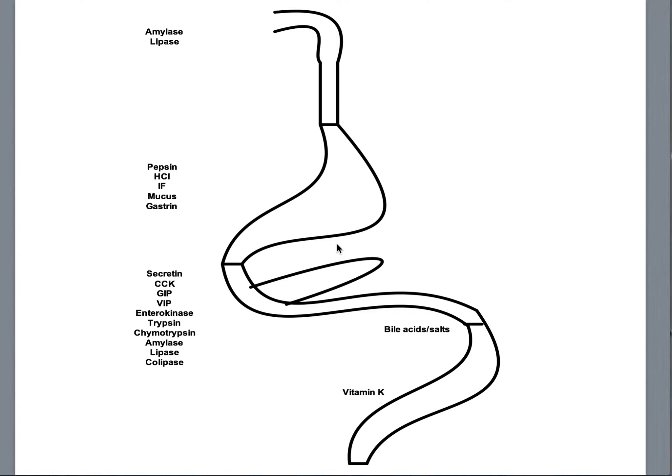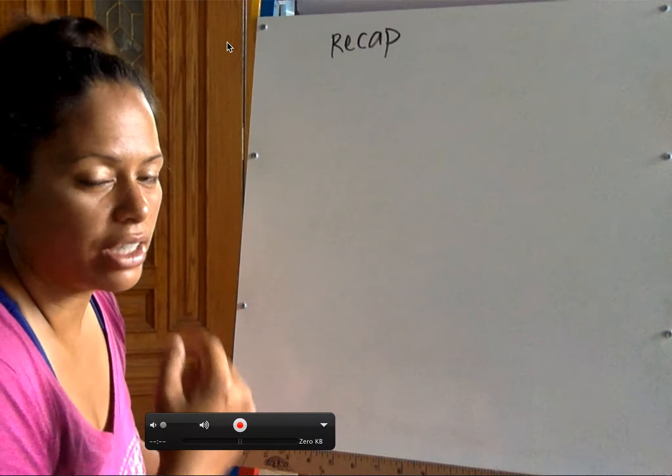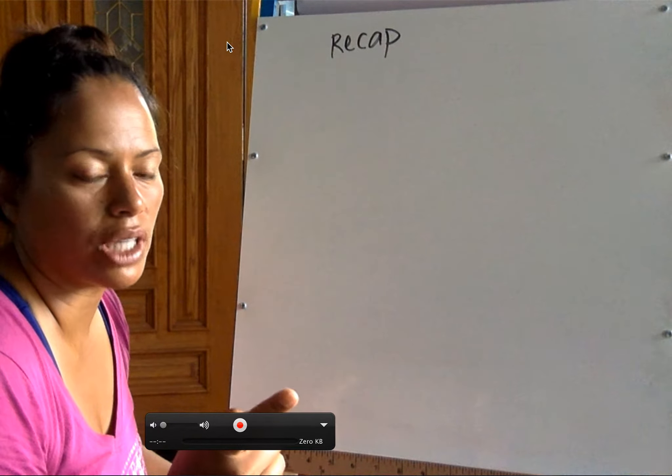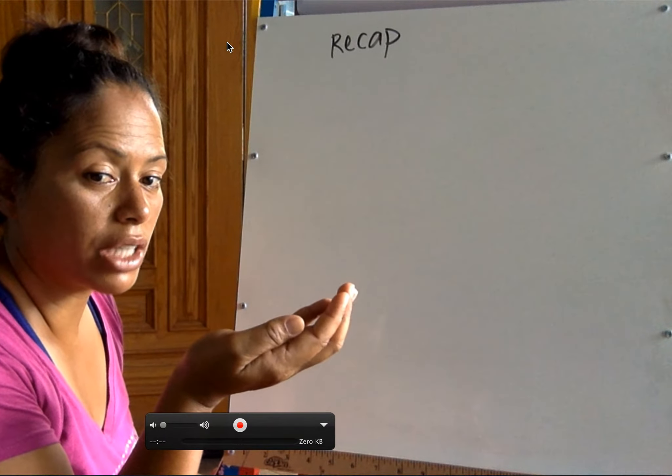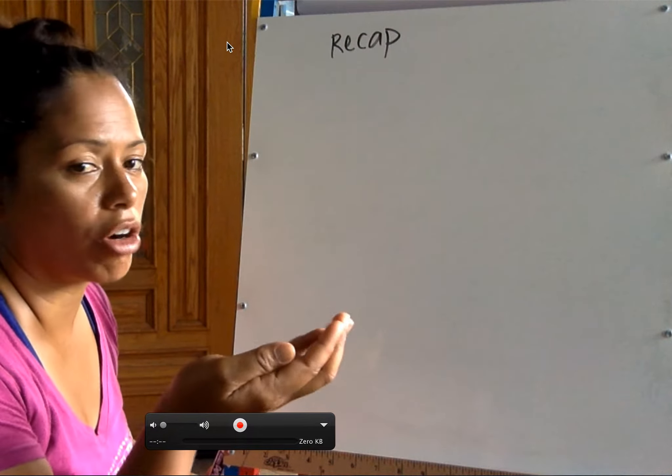Hi guys, let's do a recap of the GI tract. So here are the parts. In the mouth, what do you break down? We said finger licking good, so that was fat or lipase, and then melt in your mouth, not in your hands, that was M&M, so that's your carbohydrates.